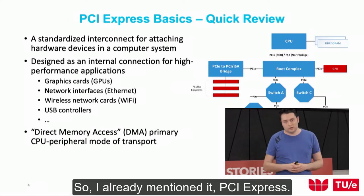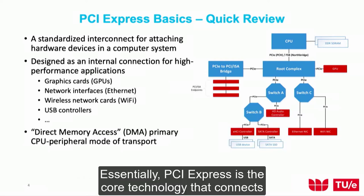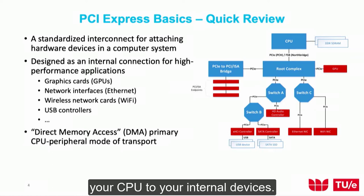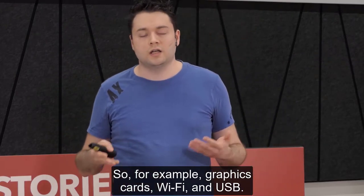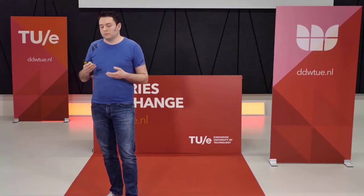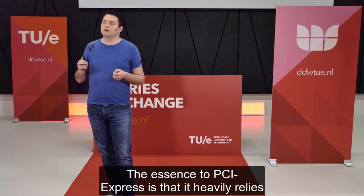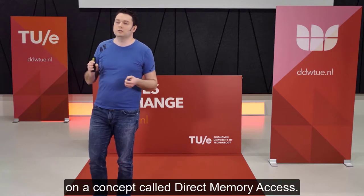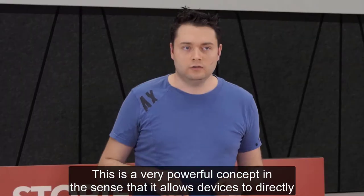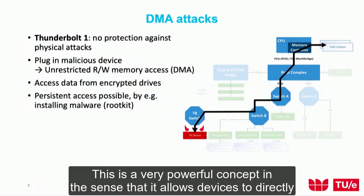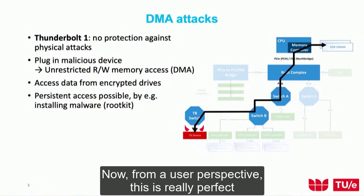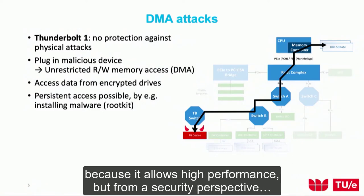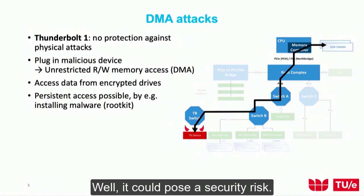PCI Express is the core technology that connects your CPU to your internal devices — for example, graphics cards, Wi-Fi, and USB. The essence of PCI Express is that it heavily relies on a concept called direct memory access. This is very powerful in the sense that it allows devices to directly write requested data into system memory. From a user perspective this enables high performance, but from a security perspective, it could pose a security risk.